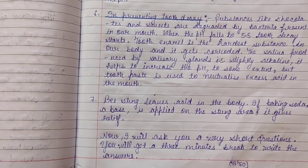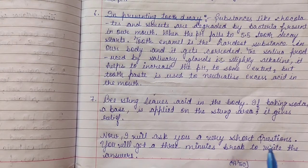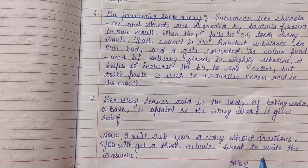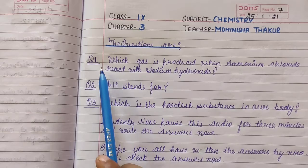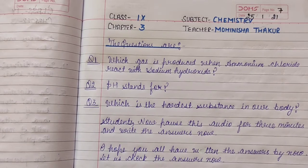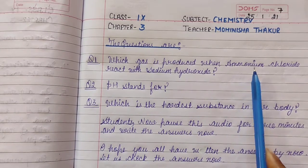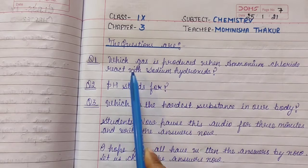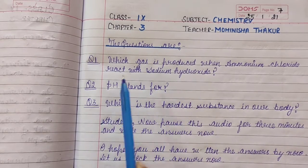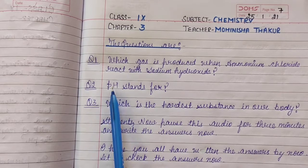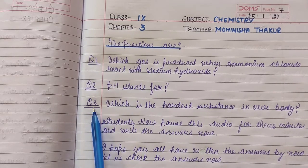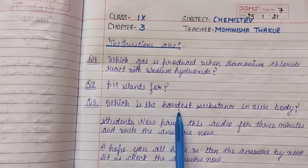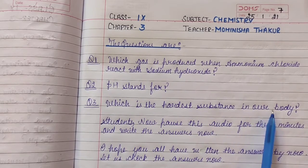Now I will ask you some short questions. You will get a 3-minute break to write the answers. Question 1: Which gas is produced when ammonium chloride reacts with sodium hydroxide? Question 2: pH stands for? Question 3: Which is the hardest substance in our body?